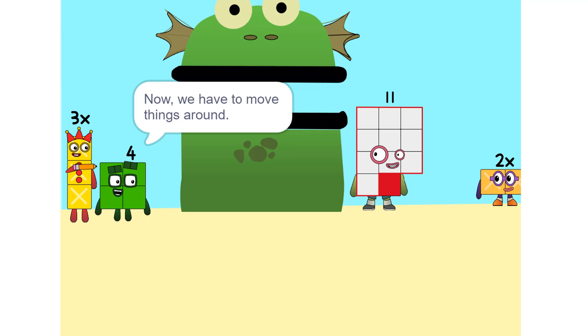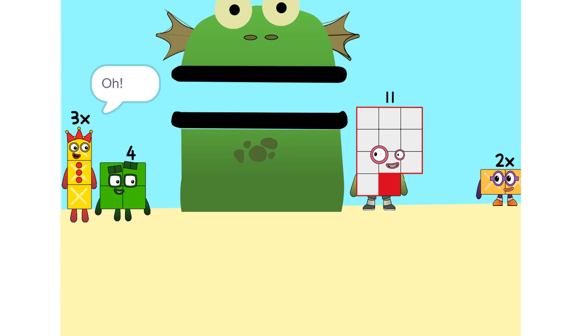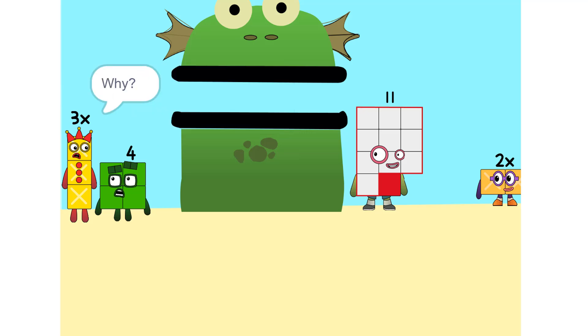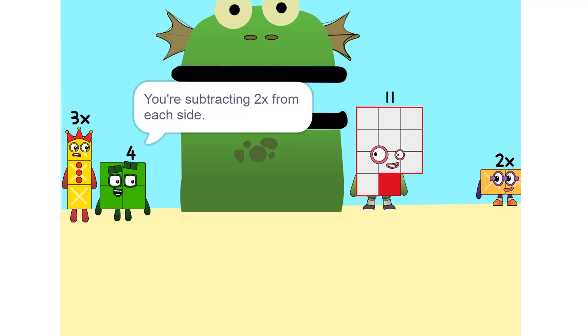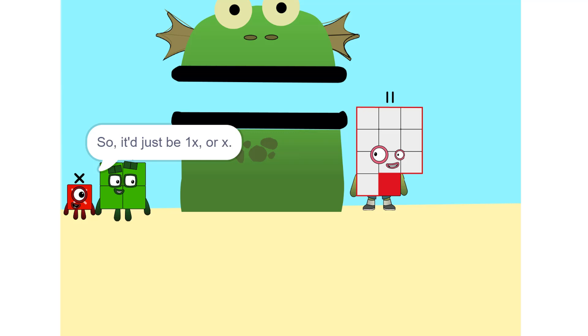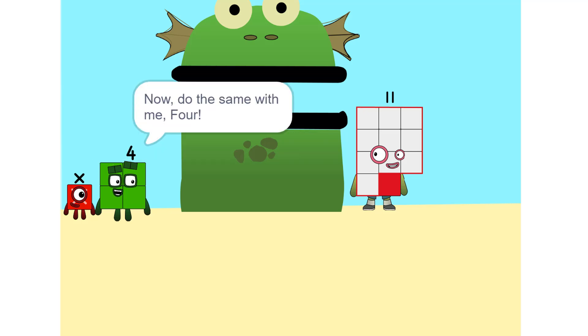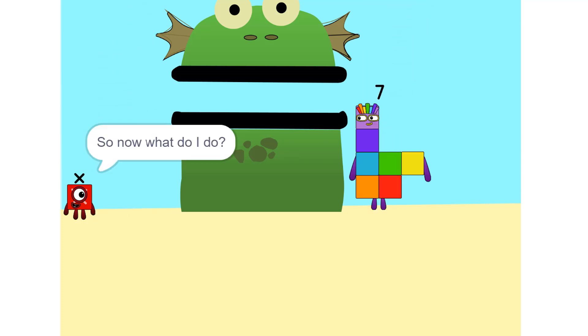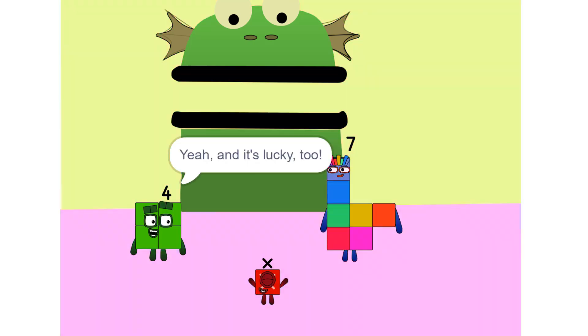Now we have to move things around. We have to move this 2X to this side. Whenever you switch sides, you have to switch its sign. So if it's positive, it becomes negative and vice versa. Why? Think of it this way. You're subtracting 2X from each side. So it'd just be 1X or X. Correct. Now do the same with me, 4. 11 minus 4 is 7. So now what do I do? What's there left to do? X equals 7, so I'm 7. Yeah. And it's lucky too.